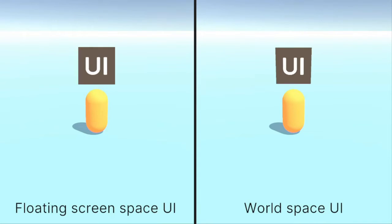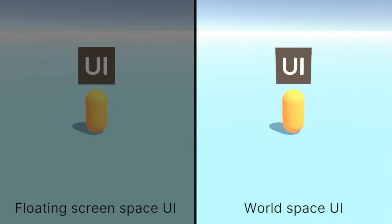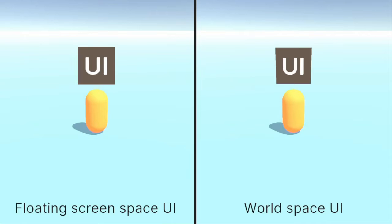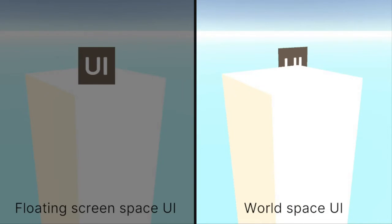As you can see, there are many differences, and those are not all. If you'd like to use one of those methods but there is a downside to it, you can sometimes implement a solution or find one on the internet. For example, our ScreenSpaceUI did not follow the capsule automatically, but we could implement a solution to move the UI. Or, if we want to use WorldSpaceUI but need the UI to always face the camera, we can implement a solution that rotates the UI towards the camera each frame — this is often called BillboardUI. But other differences are harder or impossible to overcome, like partially occluding a UI when we want to use FloatingScreenSpaceUI.